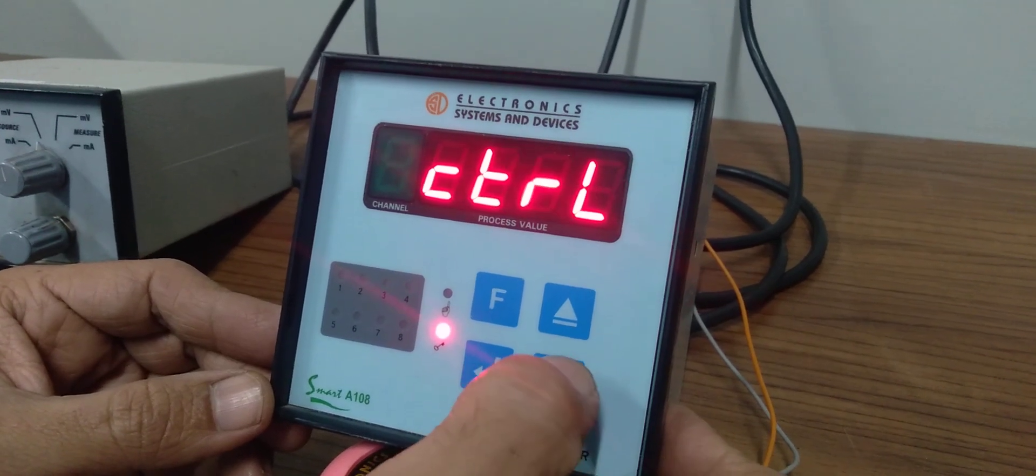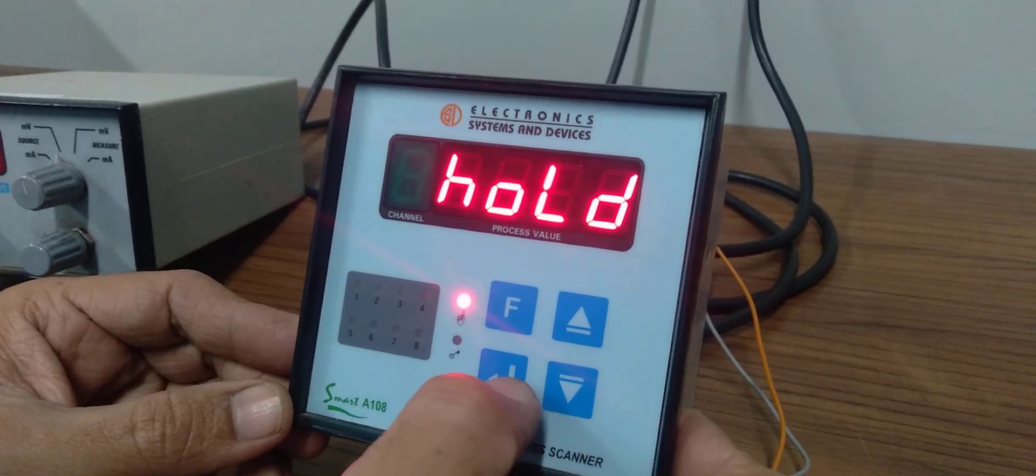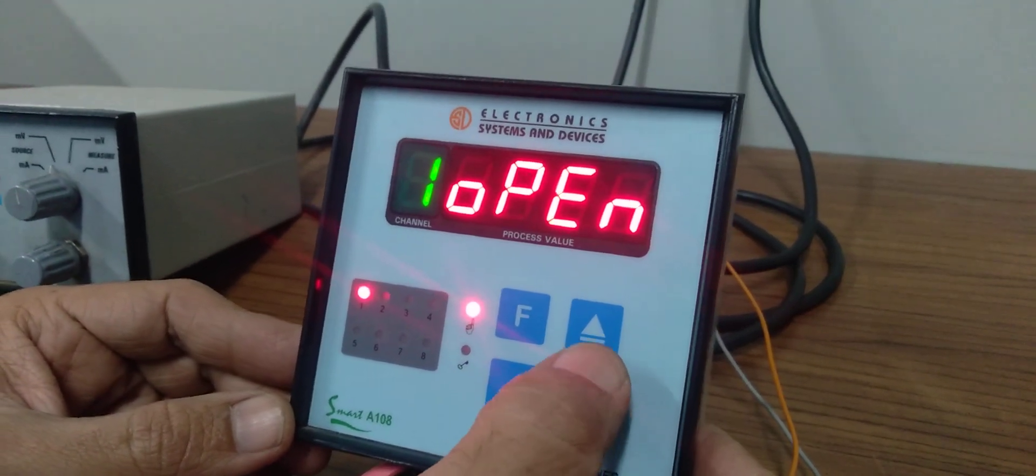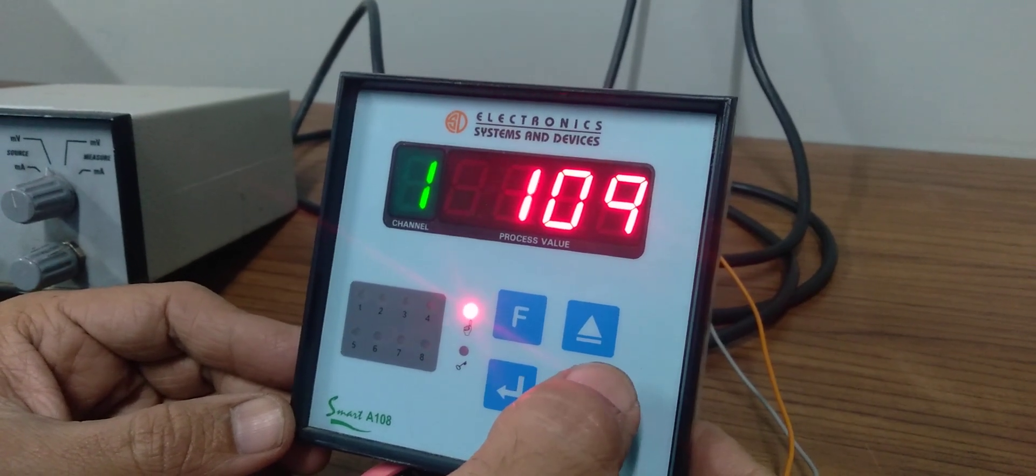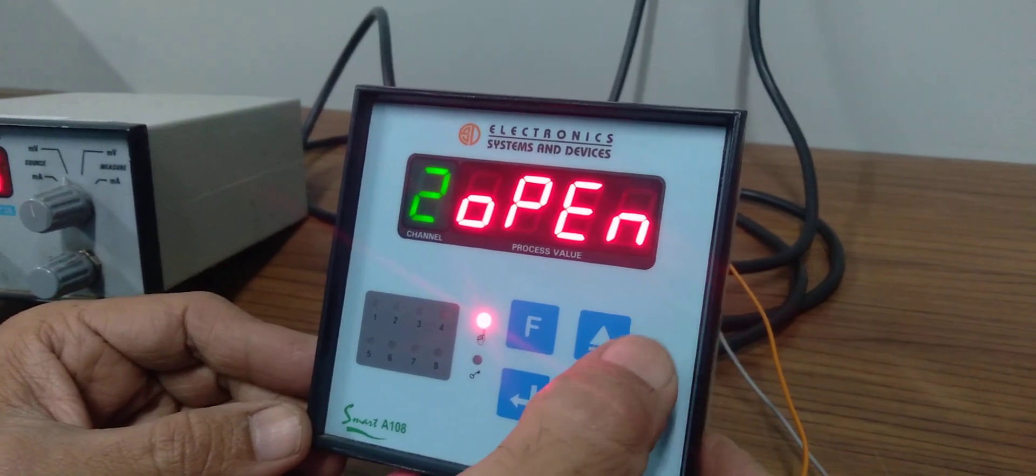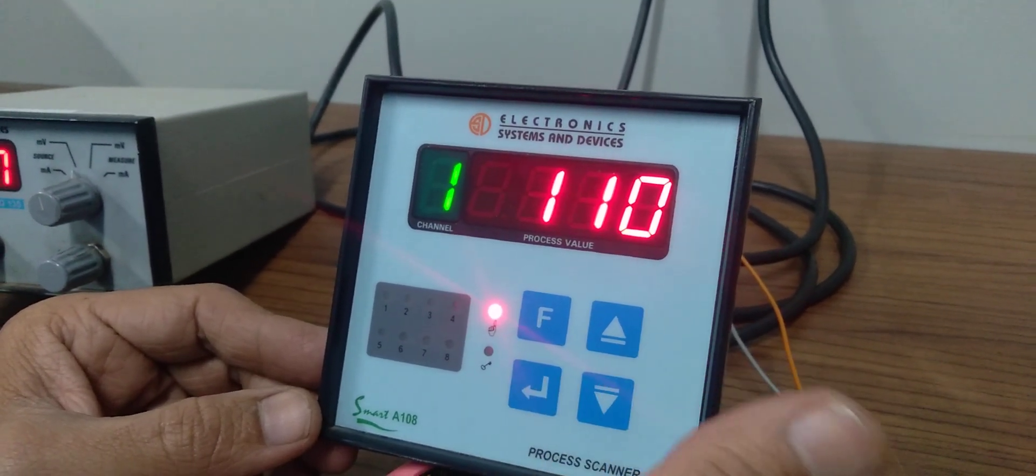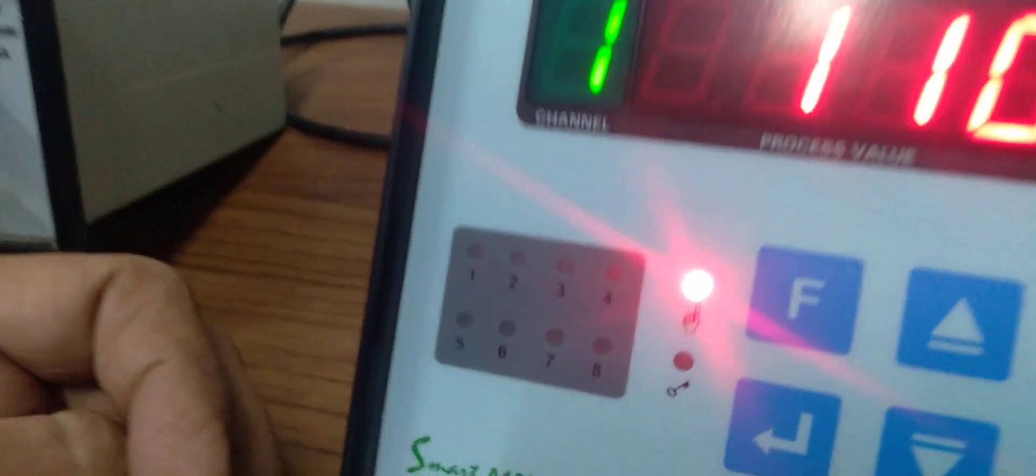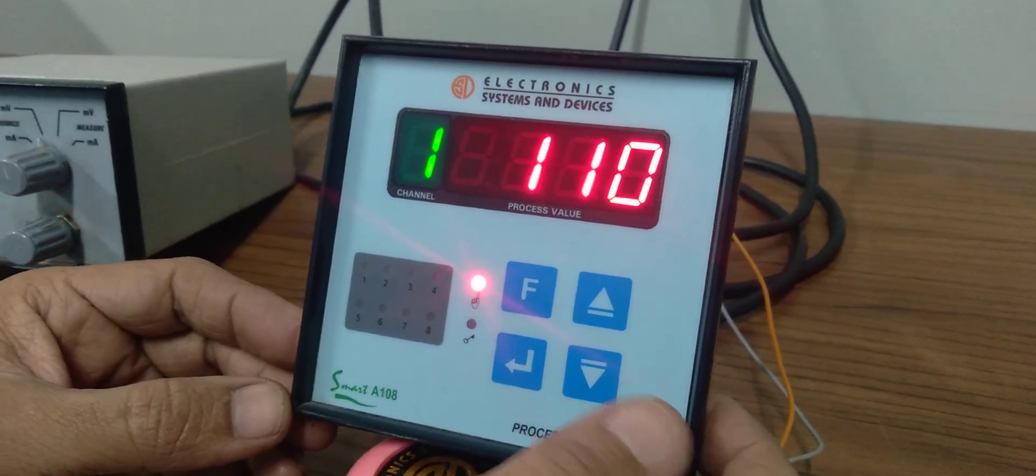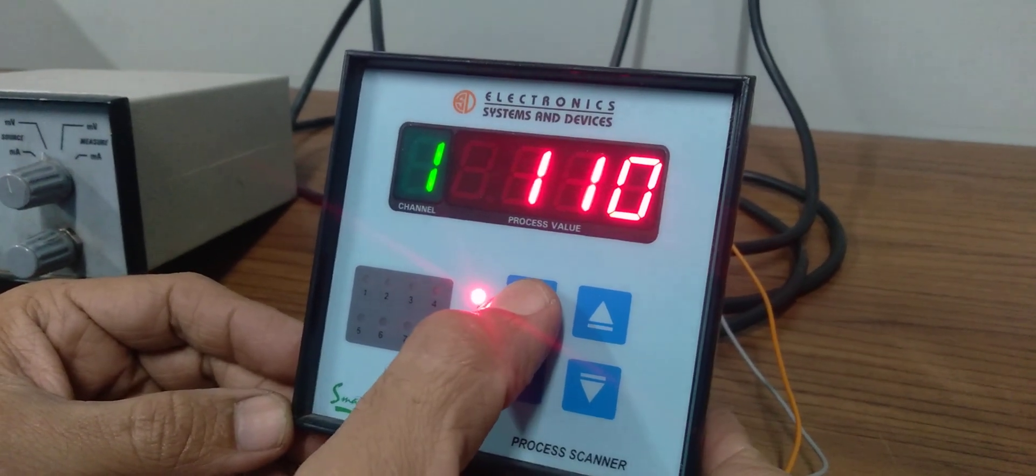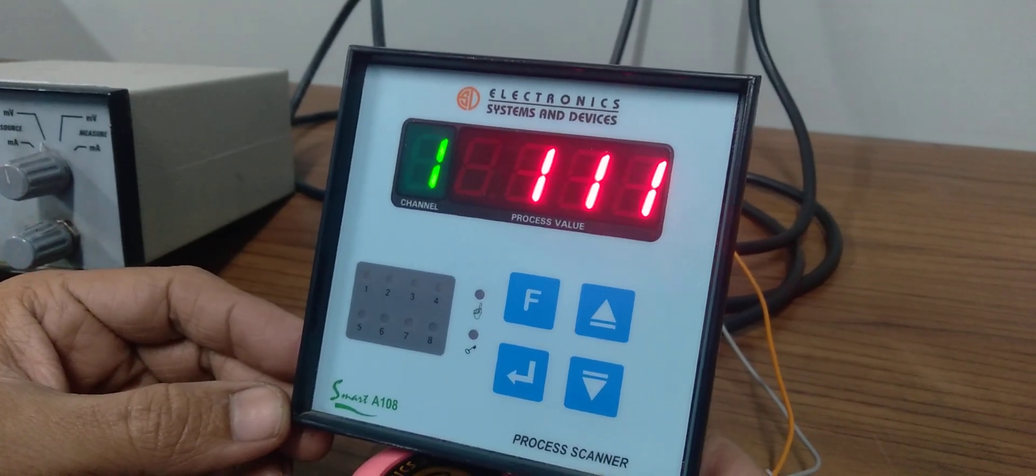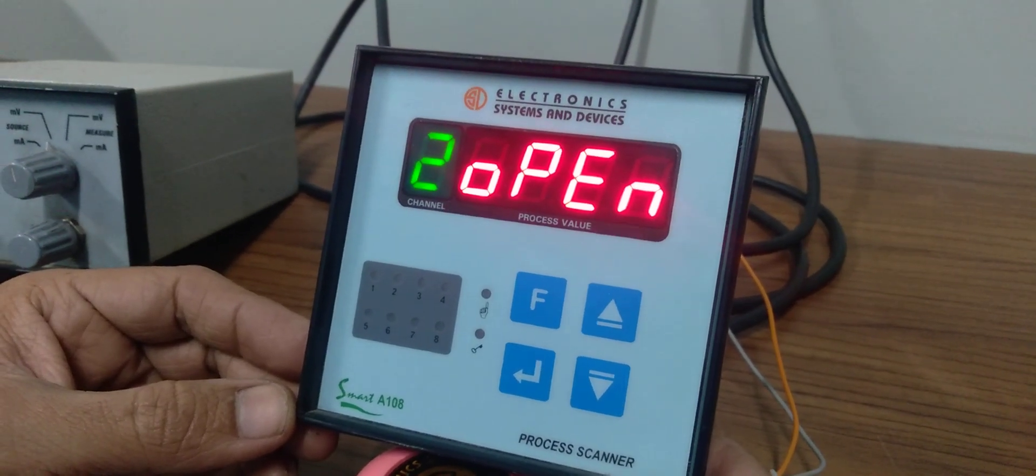We'll see the hold mode first. If you press enter here, it will show one particular channel. If you want to see another channel, press the increment key and it will go to the next channel and stay on that channel. This particular LED shows that it's in hold mode. Otherwise, in standard auto mode, each input keeps scrolling at a particular time. Now it's automatically going to the second channel, then the third channel.